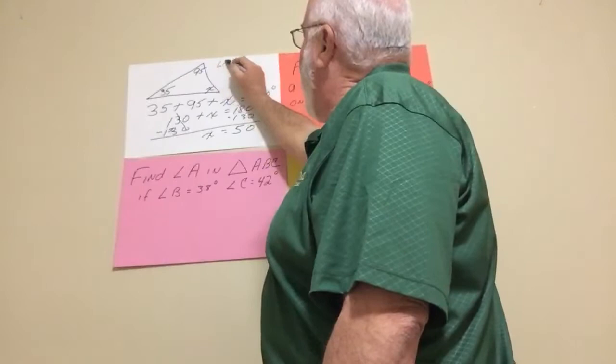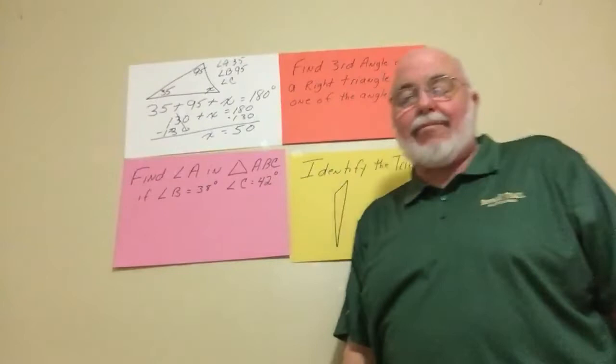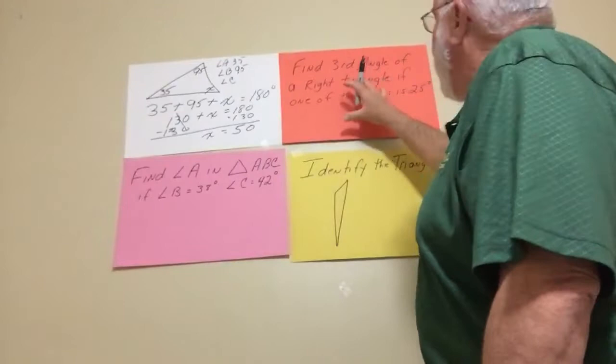So instead of putting them in a triangle, they may just say you have angle A is 35, angle B is 95. What is angle C or what is the third angle? They can label them anything they want. So very straightforward.